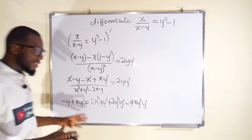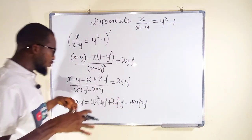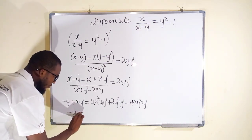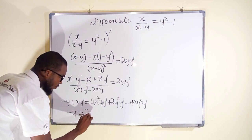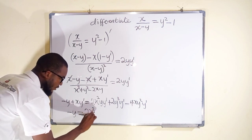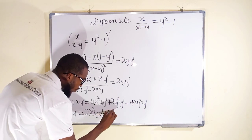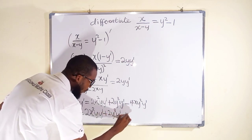Okay, every single term that contains y prime we should bring it together. To the left we have only negative y. And to the right we have 2x squared y y prime plus 2y cubed y prime minus 4xy squared y prime.